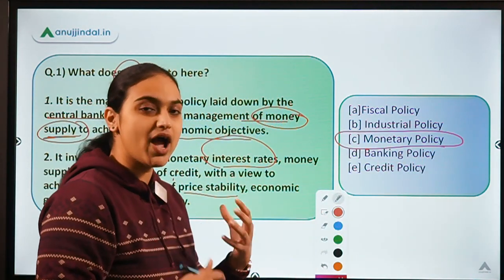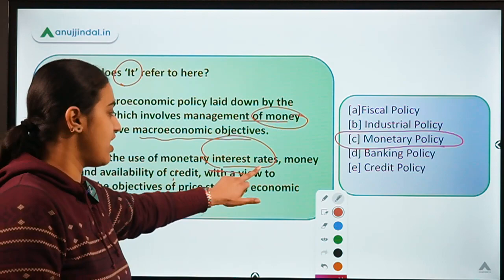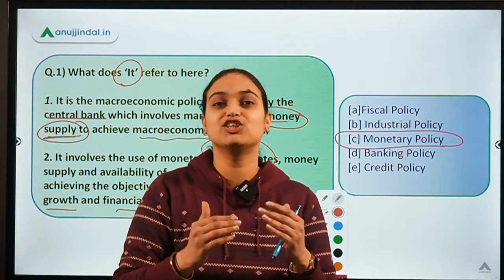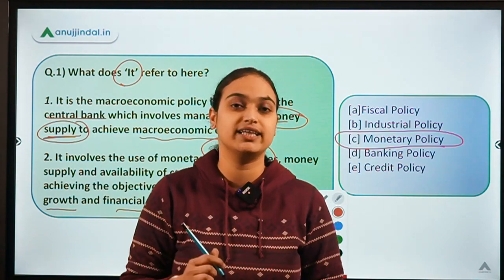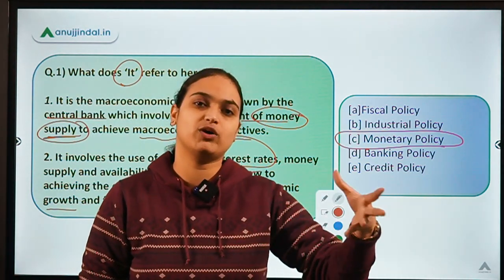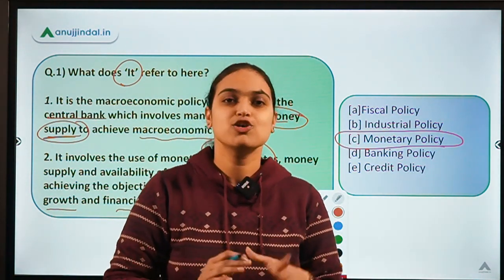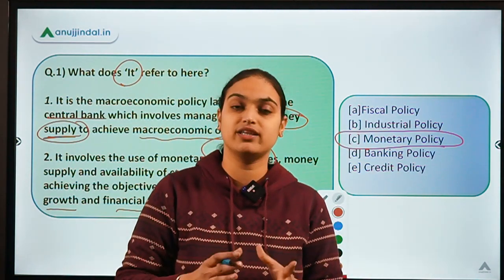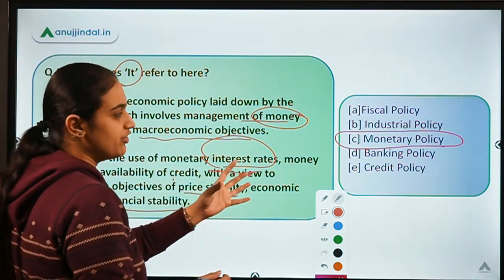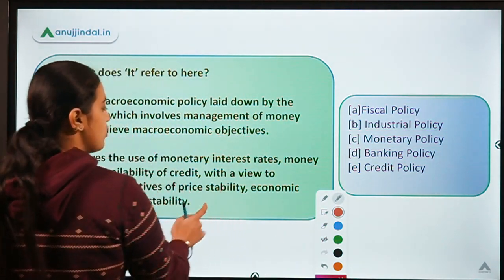In monetary policy, you try to regulate the supply of money in the economy — by 'you' I mean the central bank. The central bank makes use of different interest rates. It may increase the interest rate at which loans reach consumers. Suppose the rate was 10% and now it becomes 20% — you will not be able to take that loan because you have to repay more interest. The policy being talked about in this question is monetary policy, which is all about managing the supply of money in the economy.